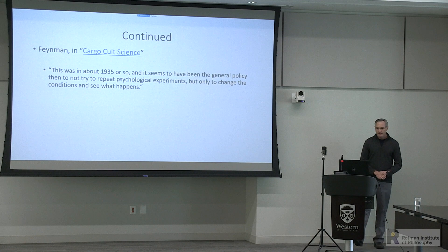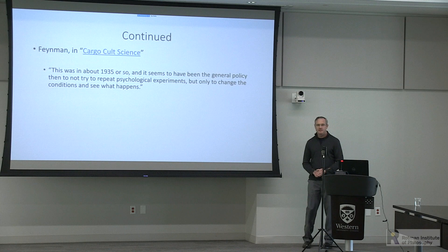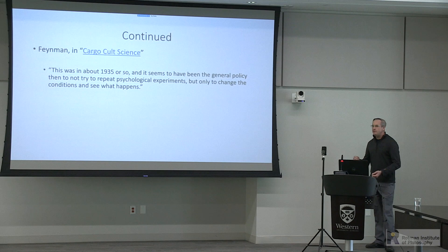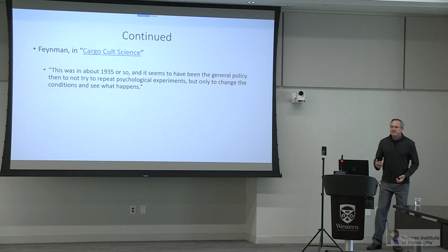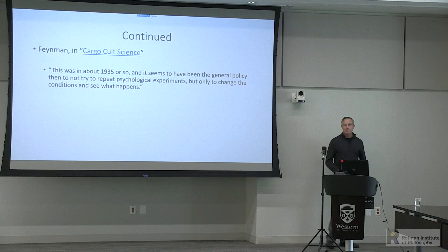We talked about Feynman earlier. He described how a young student came to his lab studying rat behavior with a new idea, and he told her to run the original study, see if she could replicate it, then change conditions and expand. But her advisor said it'd be a waste of time — just move on to conceptual replications. Feynman noted this was the general policy around 1935: not to repeat psychological experiments but only to change conditions.